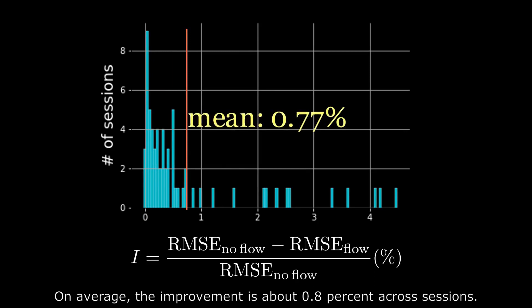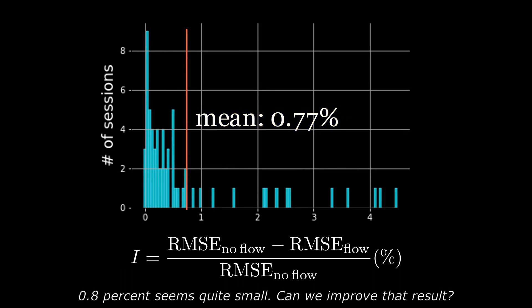On average, the improvement is about 0.8% across sessions. 0.8% seems quite small. Can we improve that result?